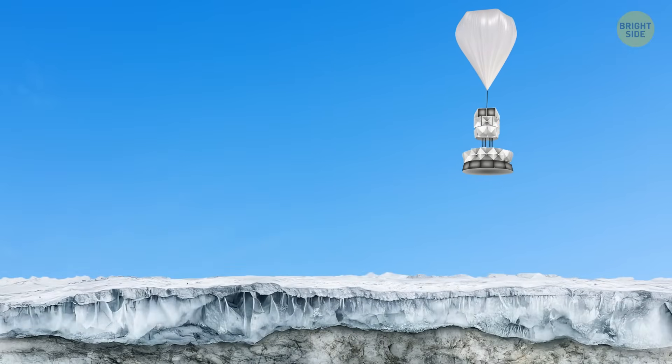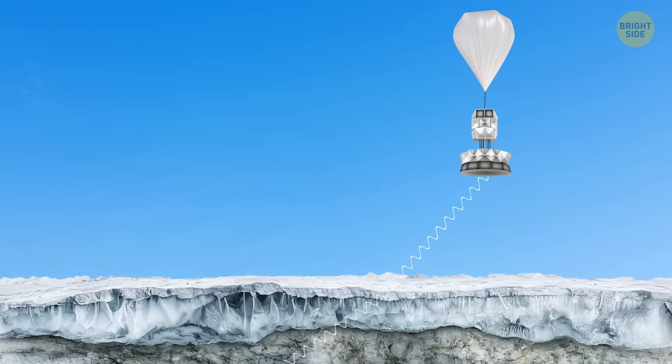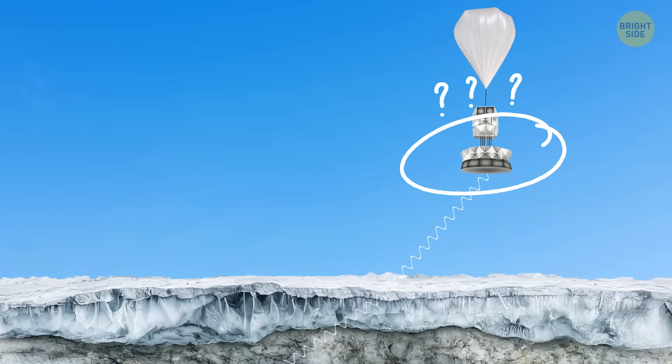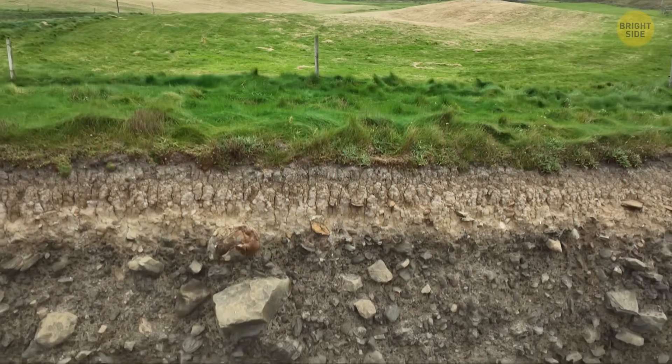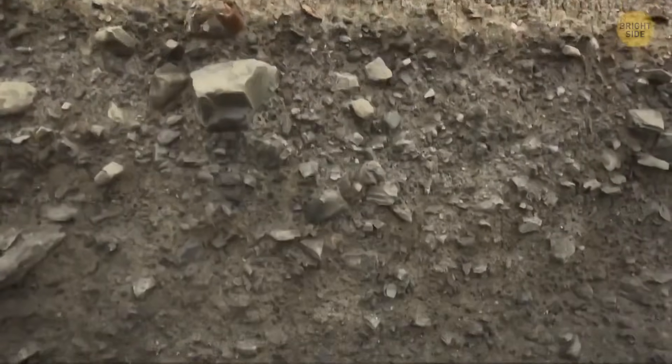But then something really weird happened. The detectors picked up radio waves that weren't bouncing off the ice at all. They looked like they were coming from below the horizon, from under the ice. Now, this shouldn't even be possible. According to everything we know about physics, signals can't just travel upward through solid rock and ice.